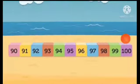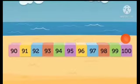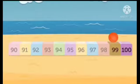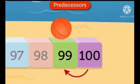Now let us look at the next image. In this image, you can see the ball is at 100. What is the before number? In the next image, the ball is at 99. That means before 100, you get the number 99. This is also called the predecessor.